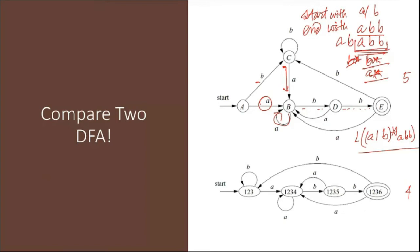Looking at the second DFA, the same language is accepted. At the beginning we have B-star, giving A brings you to a state with A-star due to a self-loop, and it ends with A, B, B. So this is another DFA for the same language: (A or B)-star ending with A, B, B. The bottom line is these two DFAs represent the same language but have different numbers of states.